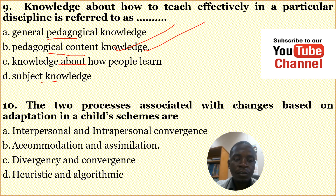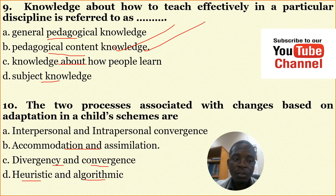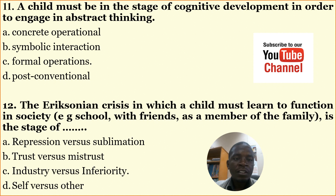Number ten: The two processes associated with changes based on adaptation in a child's schemes are — A: interpersonal and intrapersonal, B: accommodation and assimilation, C: divergence and convergence, D: heuristic and algorithmic. The correct answer is B: accommodation and assimilation.